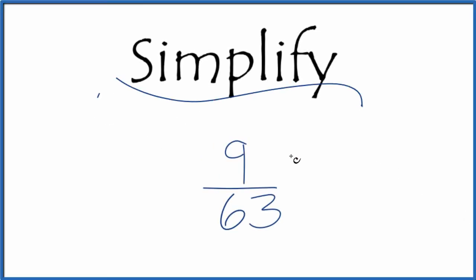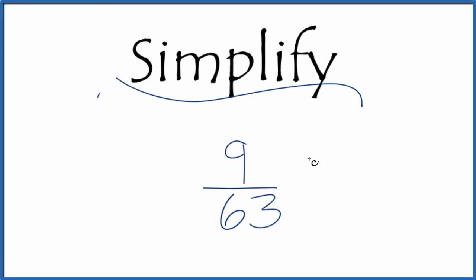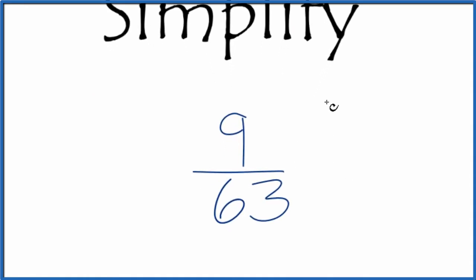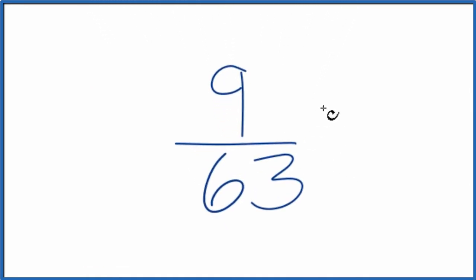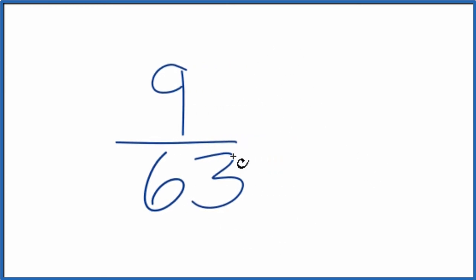Let's simplify the fraction 9/63. What we're trying to do is find another fraction that's equivalent — it has the same value as 9 over 63 — just reduced or simplified to lowest terms. So we need to find a common factor, something that goes into both 9 and 63. Here are the factors for 9 and 63.